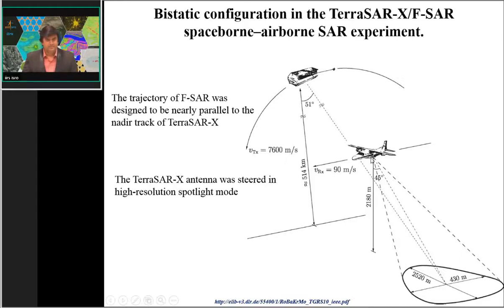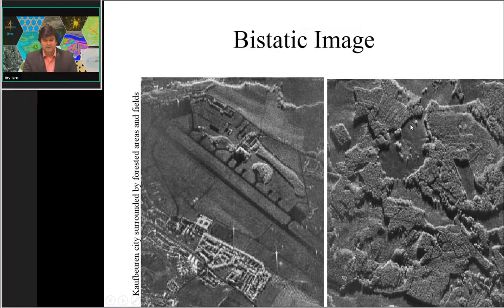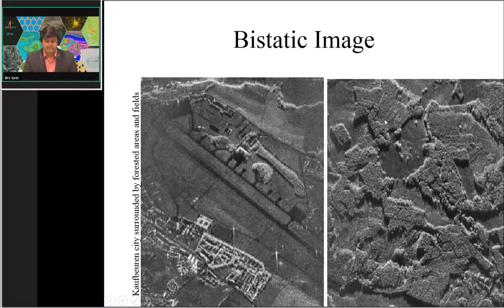In this experiment, very high resolution images were generated. Individual targets like buildings and vegetation could be easily identified. Individual trees and their shadows were visible. With bistatic SAR imaging, one is able to obtain very high spatial resolution datasets.